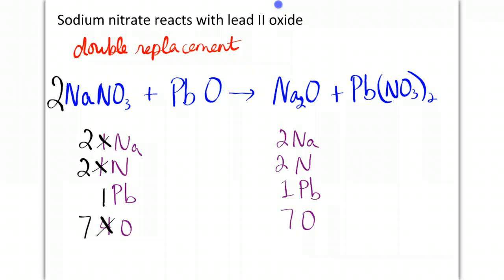And interestingly enough, after we change that one thing, my sodium, nitrogen, lead, and oxygen all match the ones on the right-hand side. So I have a mole-to-mole ratio in this equation of 2 to 1 to 1 to 1. There's a 2 to 1 to 1 to 1 mole-to-mole ratio across this equation.